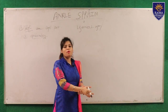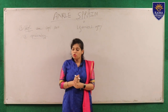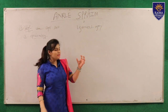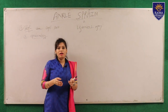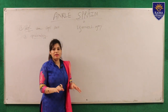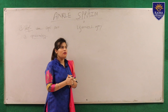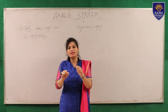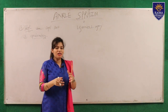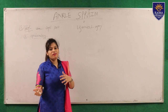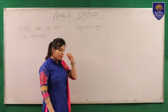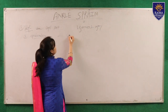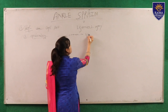Ankle sprain is also suggested to be common in both the sports population and normal people who have previously had an ankle sprain, as it is a type of recurrent injury. When the lateral ankle ligament is torn with poor rehabilitation and poor treatment, the elasticity and relevance of the ligament becomes weak, leading to degenerative conditions and recurrent injury.